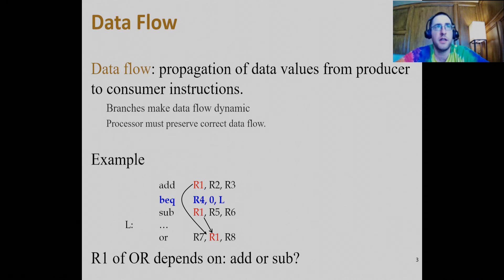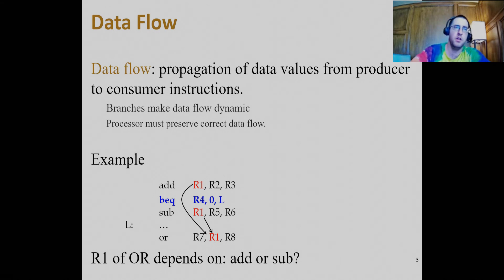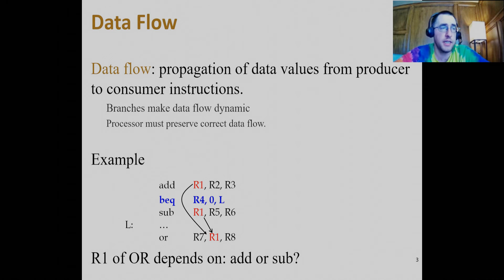Data hazards come from data dependencies in the data flow of a program. Here's an example: adding into R1 the values of R2 plus R3, then a branch, then subtracting into R1, and after the branch, an OR operation for R1. The R1 of OR depends on either the add or the subtract depending on the branch outcome.